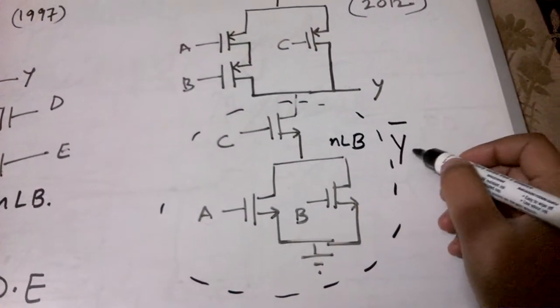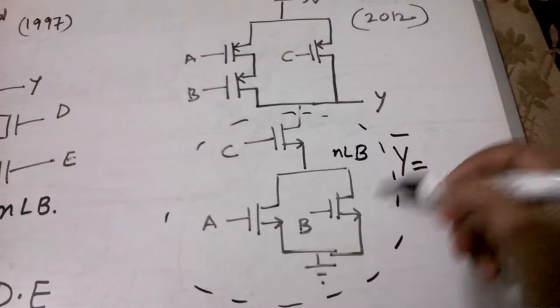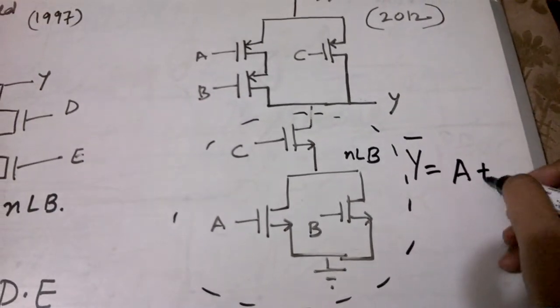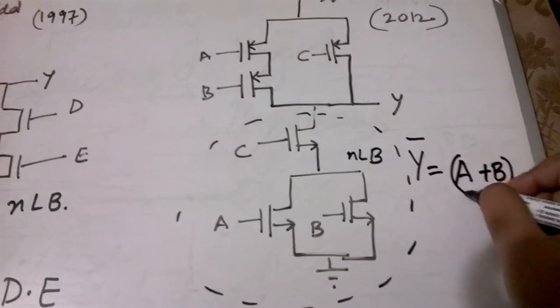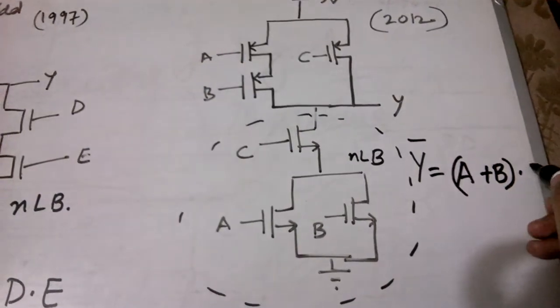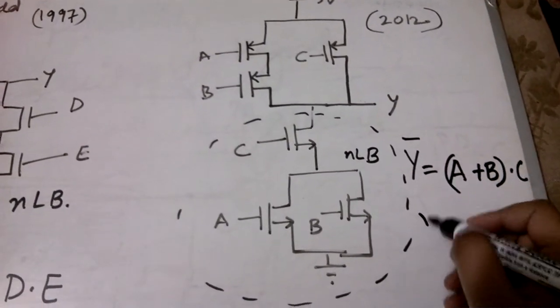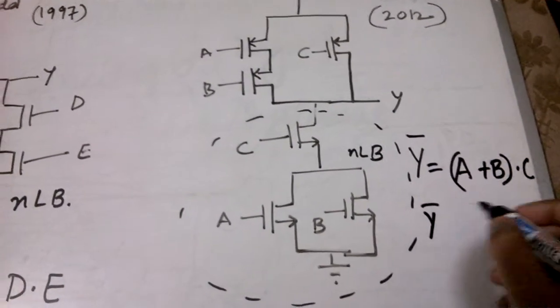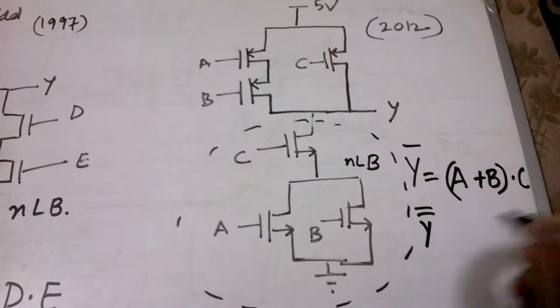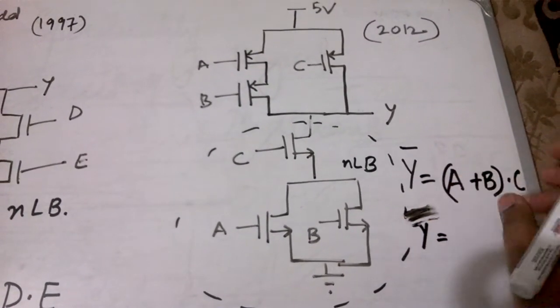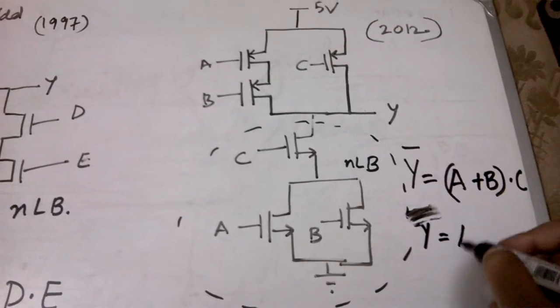So we will write Y bar is equal to A and B are in parallel so we write A plus B and C is in series with the combination so dot C. So what will Y be equal to? We take bar on both the sides so Y bar bar is basically Y only. So this becomes Y is equal to A plus B dot C whole bar.